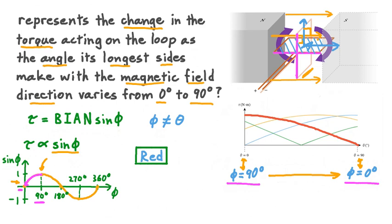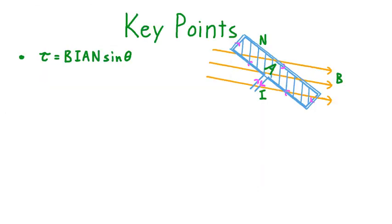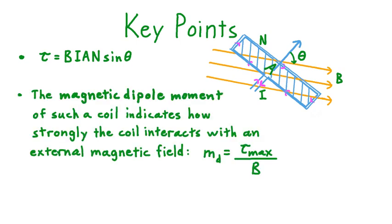In summary, if we have a current-carrying rectangular loop in a uniform magnetic field, then that loop experiences an overall torque tau = B × I × A × N × sin(theta), where theta is the angle between a vector perpendicular to the cross-sectional area of the coil and the magnetic field lines. We also learned the term magnetic dipole moment, which indicates how strongly a coil interacts with an external magnetic field. The magnetic dipole moment m_d equals the maximum torque experienced by the coil divided by the strength of the field it's in.